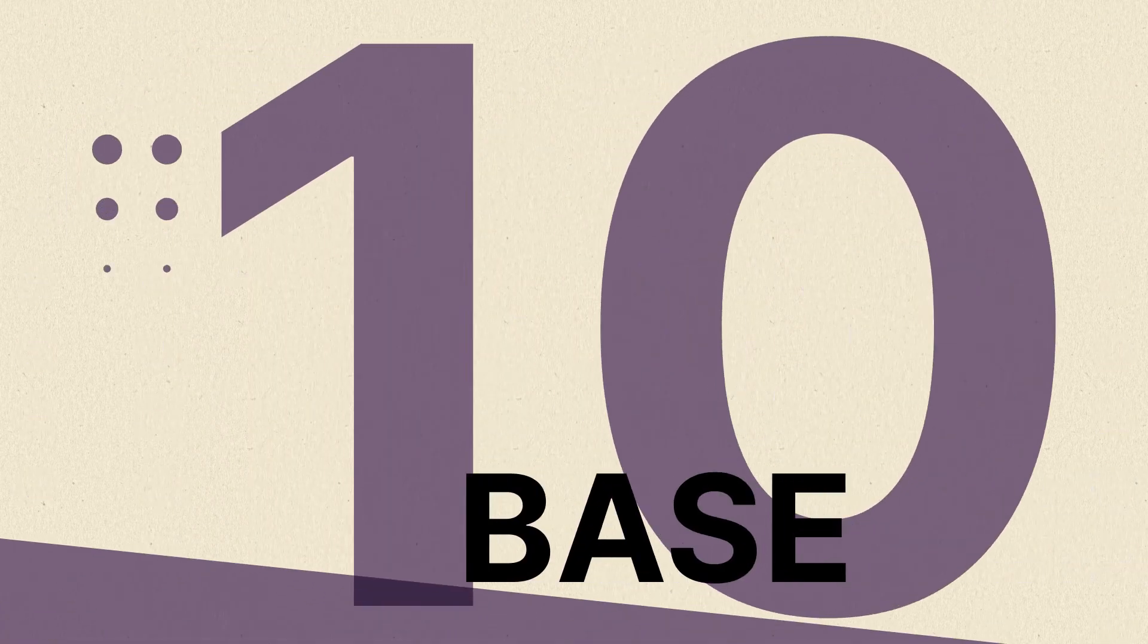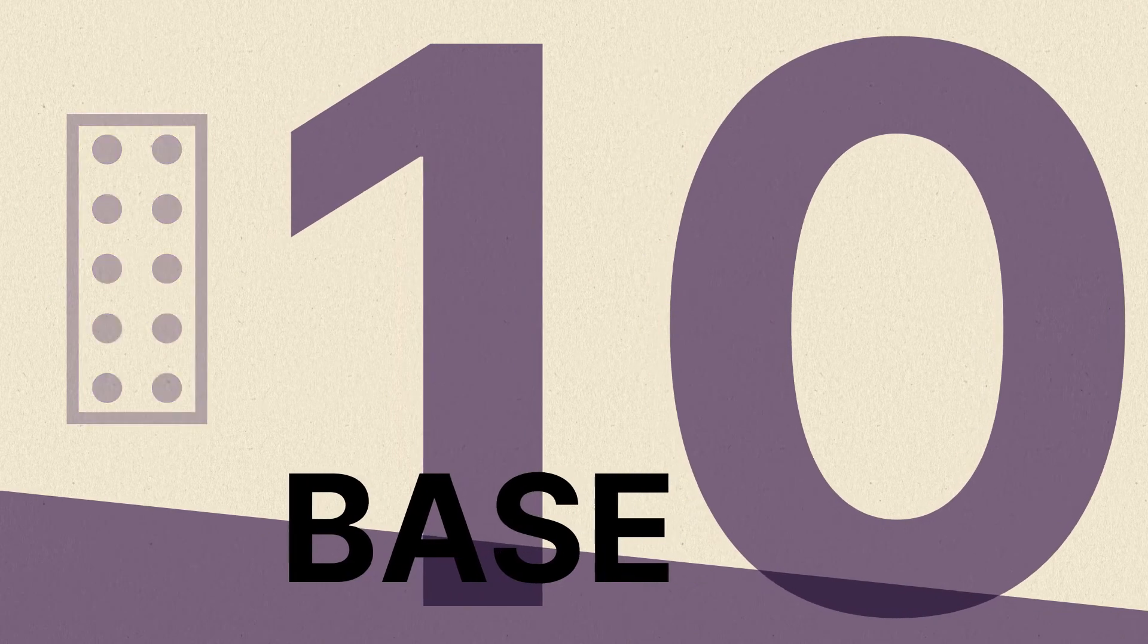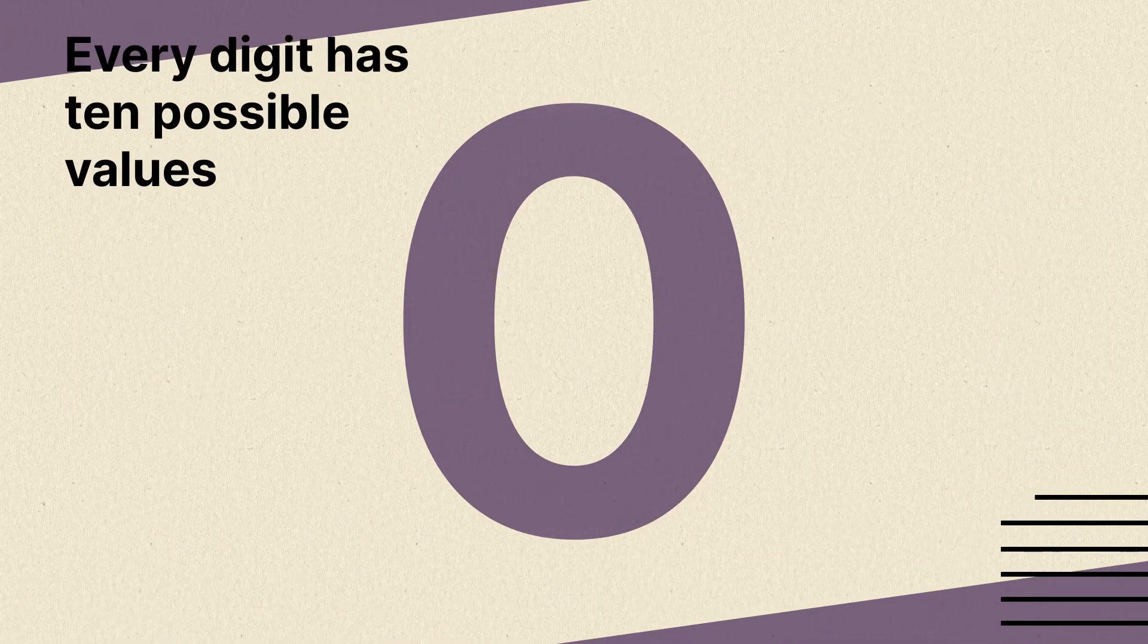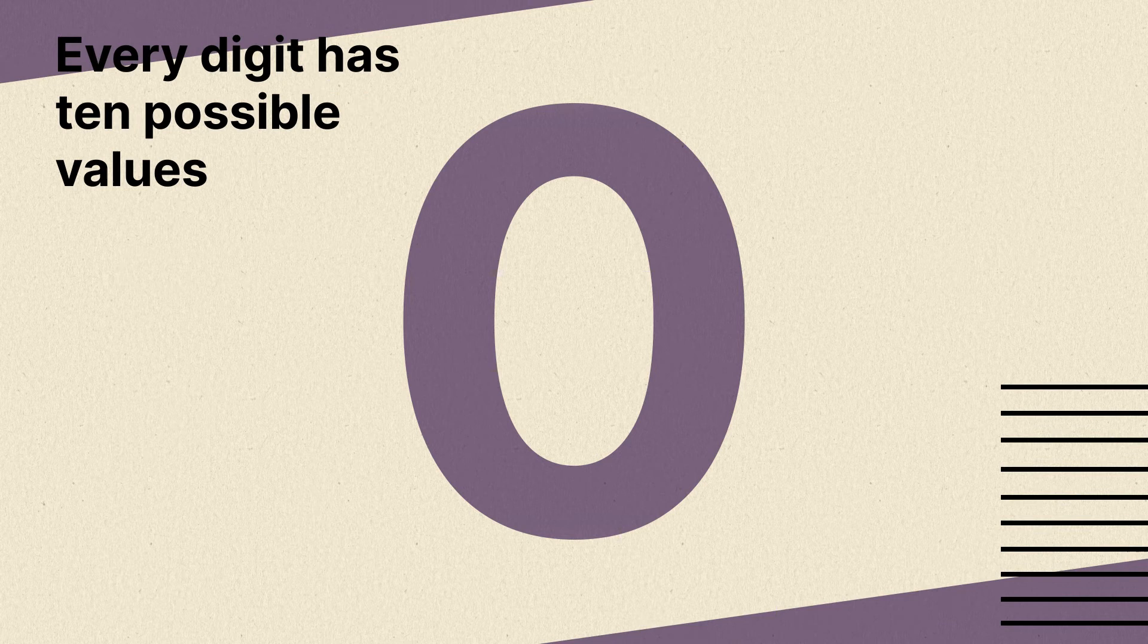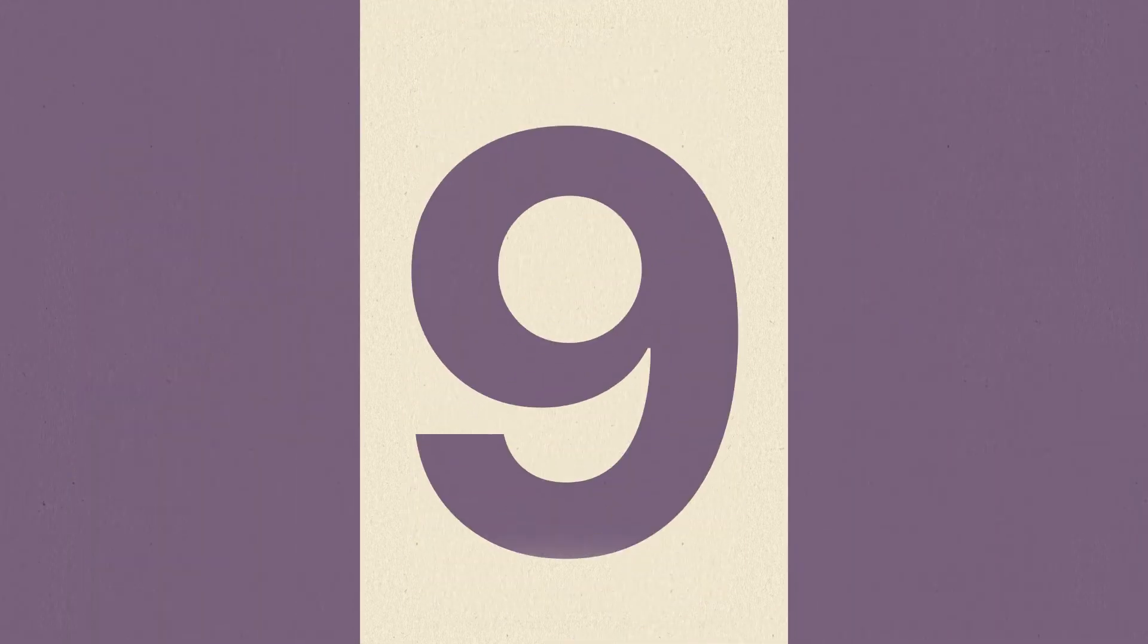A lot of it has to do with the base 10 number system we use. In the base 10 system, every digit has 10 possible values, the numbers 0 through 9. Once we hit the highest value, we go up to the next place value and start over at 0 again.